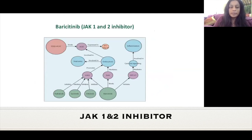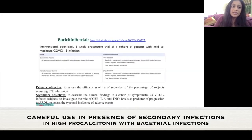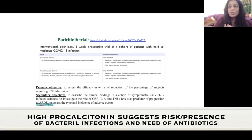Baricitinib is a JAK-1 and JAK-2 inhibitor. JAK stands for Janus kinase, which is present on cell surfaces, and inhibiting it reduces downstream cytokine release. It has been useful in rheumatoid arthritis, lupus, psoriatic arthritis, and ankylosing spondylitis. A trial is ongoing for baricitinib in COVID-19, but there are concerns about its ability to worsen infection. We must be careful with tocilizumab and baricitinib, especially in patients with secondary bacterial infection — a high procalcitonin requires antibiotic cover alongside these agents.